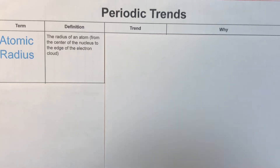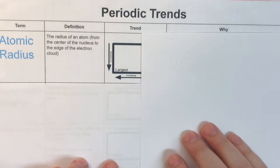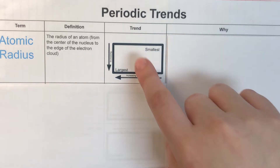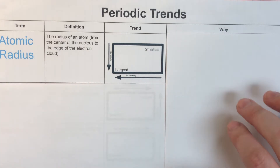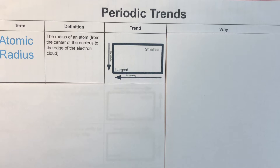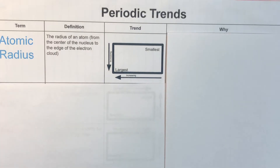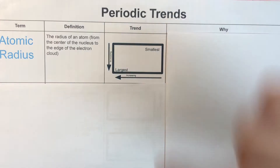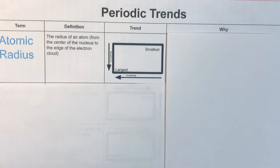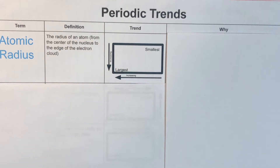When we talk about atomic radii, we need to know what our actual trend is going to be. We have this diagram of a rectangle, which is going to stand in for a periodic table. We have arrows where the heads point toward the increasing trend. In the top right-most corner, we have the very smallest atoms — those are going to be our helium atoms. In the bottom left-hand corner, we have our largest atoms, which are going to be francium. So as we go from left to right, we get smaller, and as we go from top to bottom, we get larger.